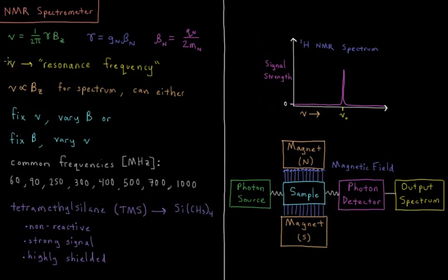So this value nu is called the resonance frequency. That is the frequency of the photon that we absorb to go between the alpha and beta spin up and spin down states of our nucleus. That frequency is proportional to the external magnetic field in the z direction specifically.